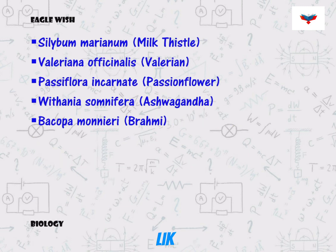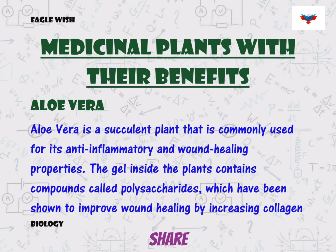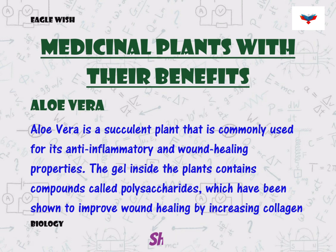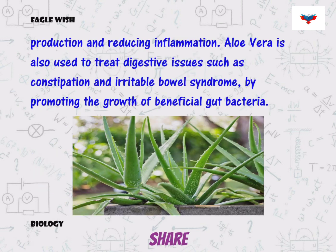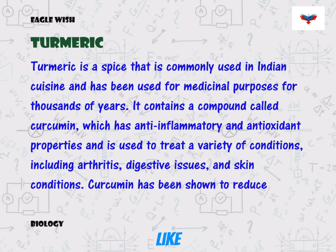We will also mention some specific medicinal plants along with their benefits. Aloe vera is a medicinal plant commonly used for anti-inflammation and wound healing properties. Turmeric has antioxidant properties and is used to treat arthritis, digestive issues, and skin conditions.